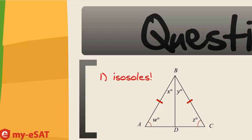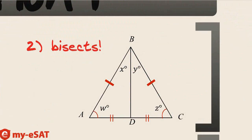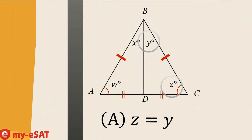So W equals Z — let's mark that on our diagram. Then second, the problem tells us that BD bisects AC. And what does bisects mean? It means divided exactly in half. So then AD is equal to DC. Let's mark that accordingly. Now let's look at our answer choices and eliminate the one that cannot be concluded from what we know.